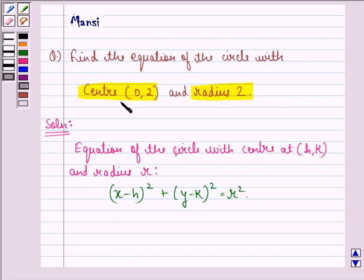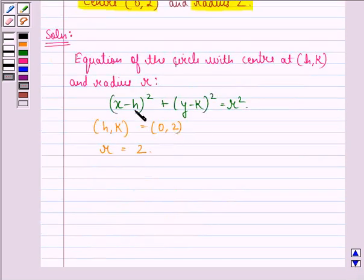Now it is given to us that center is (0, 2), that means (h, k) is (0, 2), and radius r is equal to 2.